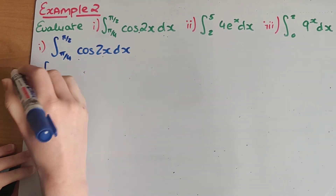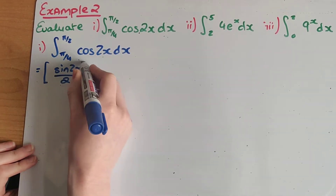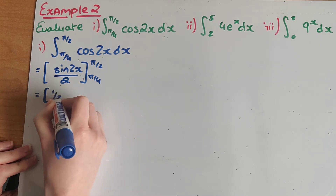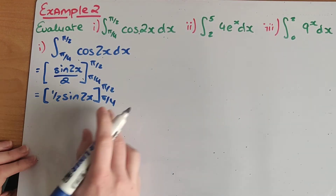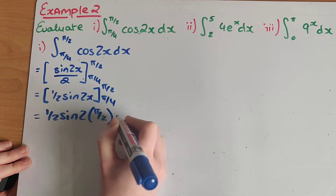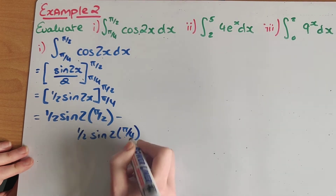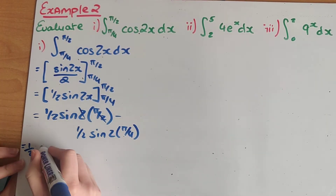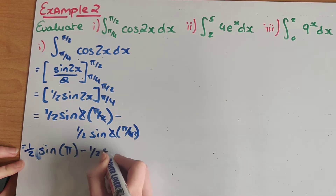The first thing I'd note is that when I integrate cos, cos goes to sine of 2x. And by my rule, I need to divide by two, giving me ½ sine(2x) with π/2 and π/4 as my definite integrals. Remember, we always sub in the top first. So I have ½ sine(2 × π/2) minus ½ sine(2 × π/4). Simplifying: the twos cancel to give me ½ sine(π), and then two and four cancel to leave me with ½ sine(π/2).